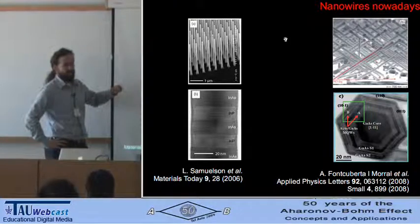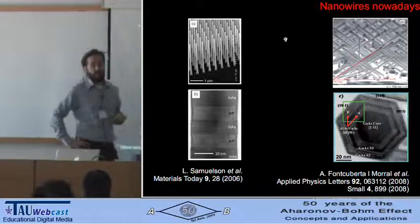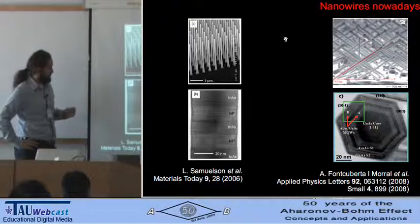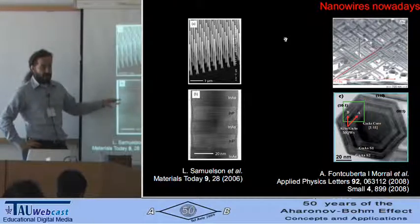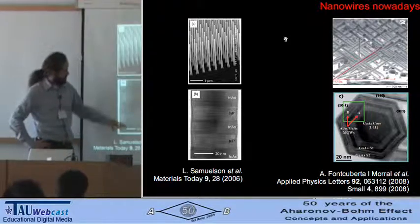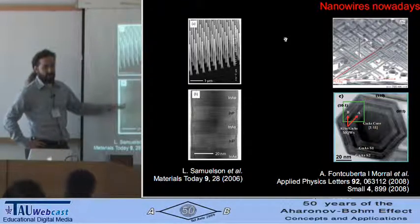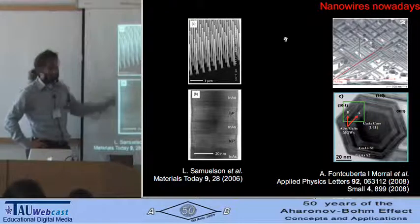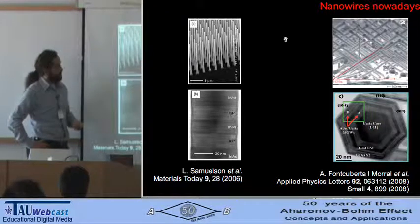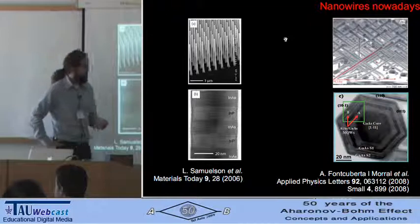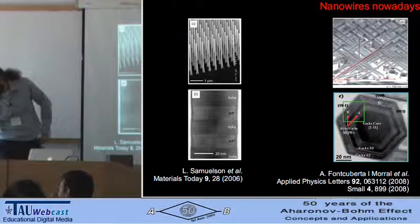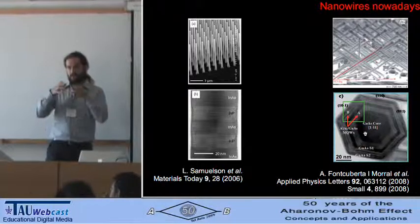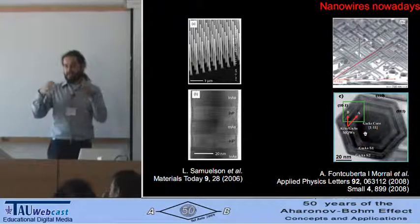We can also control the orientation of the nanowires. Most importantly, we can modulate the growth so that we can change the composition while we grow. So it is possible to have quantum dots — since this is a one-dimensional system, by modulating it we have zero-dimensional systems. But what I want to focus on today is the radial modulation: you have a nanowire that is the core, and then you can grow different semiconductors around it.